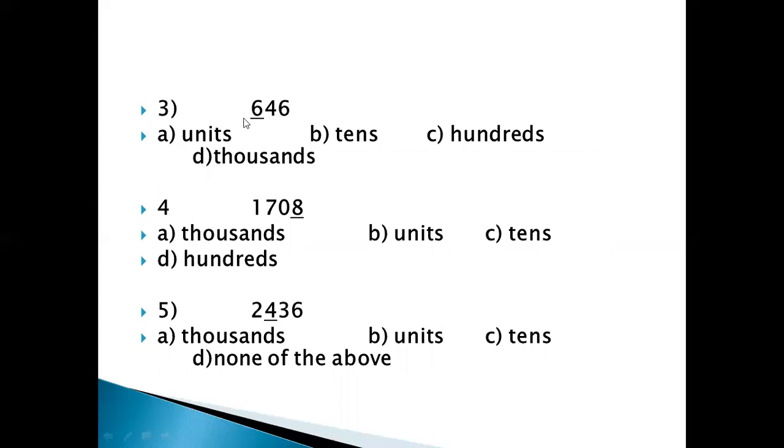Number 3 is 646. The digit that is underlined is 6 that is to your extreme left. And the options are A is units, B is 10th, C is 100th and D is 1000th. Now you will circle the correct option or you can also tick the correct option.